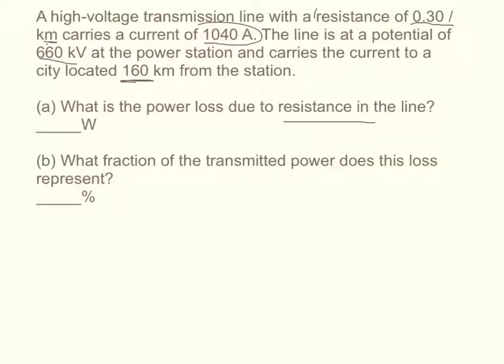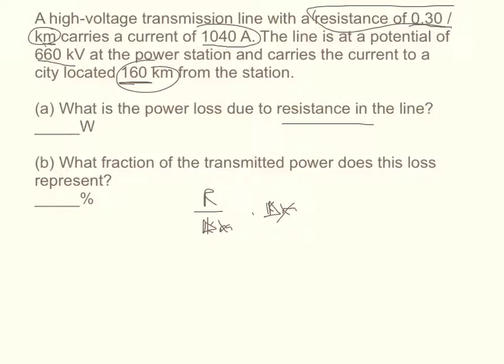In this problem, we're not given resistance directly, we're given resistance per unit of length. So we're given resistance per kilometer, and if we multiply that by kilometers, we're given basically resistance per delta x, and we multiply that by delta x. They're already in the same units, so you just do 0.3 ohms of resistance per one kilometer, and multiply that by the 160 kilometers, and your kilometers will cancel out. Ultimately, you should get a resistance equal to 48 ohms.